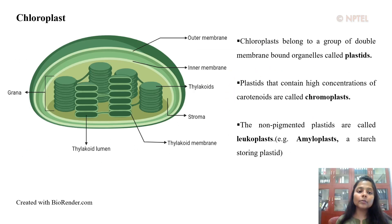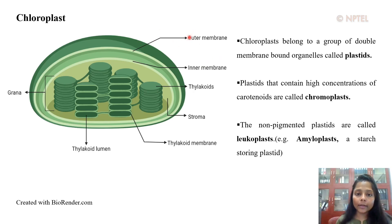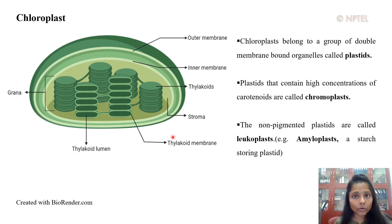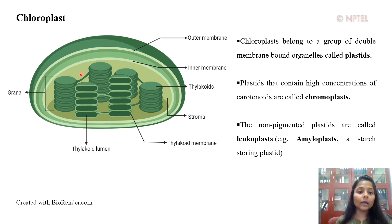Next up is another mostly plant-specific organelle: the chloroplast. Chloroplasts belong to a group of double membrane-bound organelles called plastids. They are surrounded by an outer membrane and an inner membrane. Apart from these two membranes, chloroplasts also contain a third membrane system called the thylakoid membrane. The coin-like structure is referred to as thylakoid, and a stack of thylakoids is often referred to as grana. The thylakoid membrane is the region where many proteins and pigments that participate in the photochemical events of photosynthesis remain embedded. The grana are surrounded by an aqueous matrix called the stroma and are connected with each other by stromal lamellae.